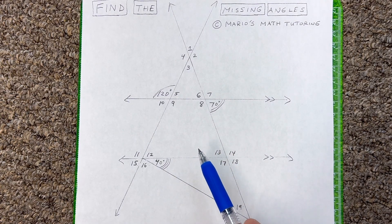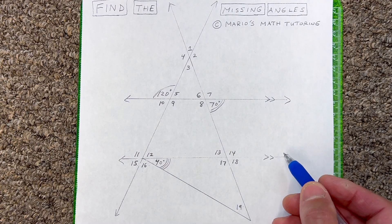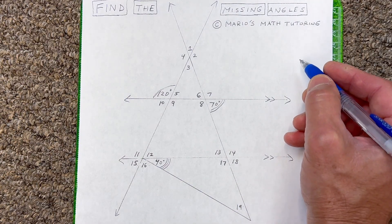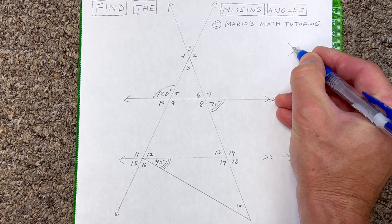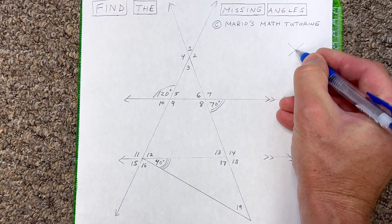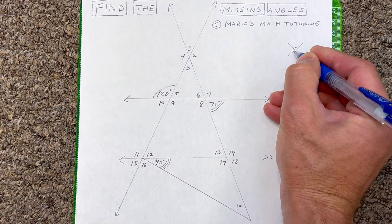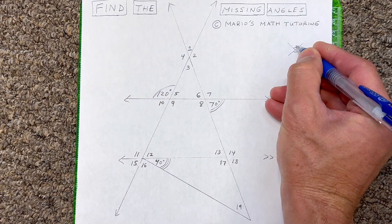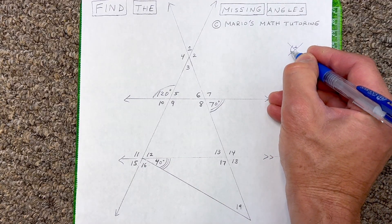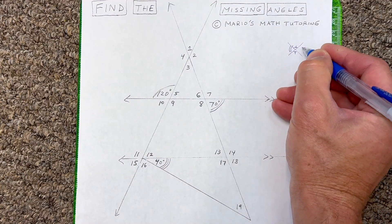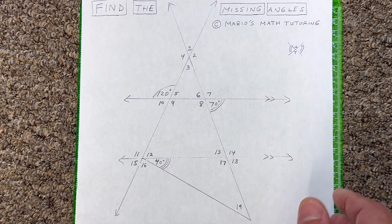Let's take a look at a couple introductory examples. One thing you always want to look for is whenever you see an X like this — where two lines intersect — the angles across from each other are going to be congruent, they're going to be equal. We call those vertical angles.